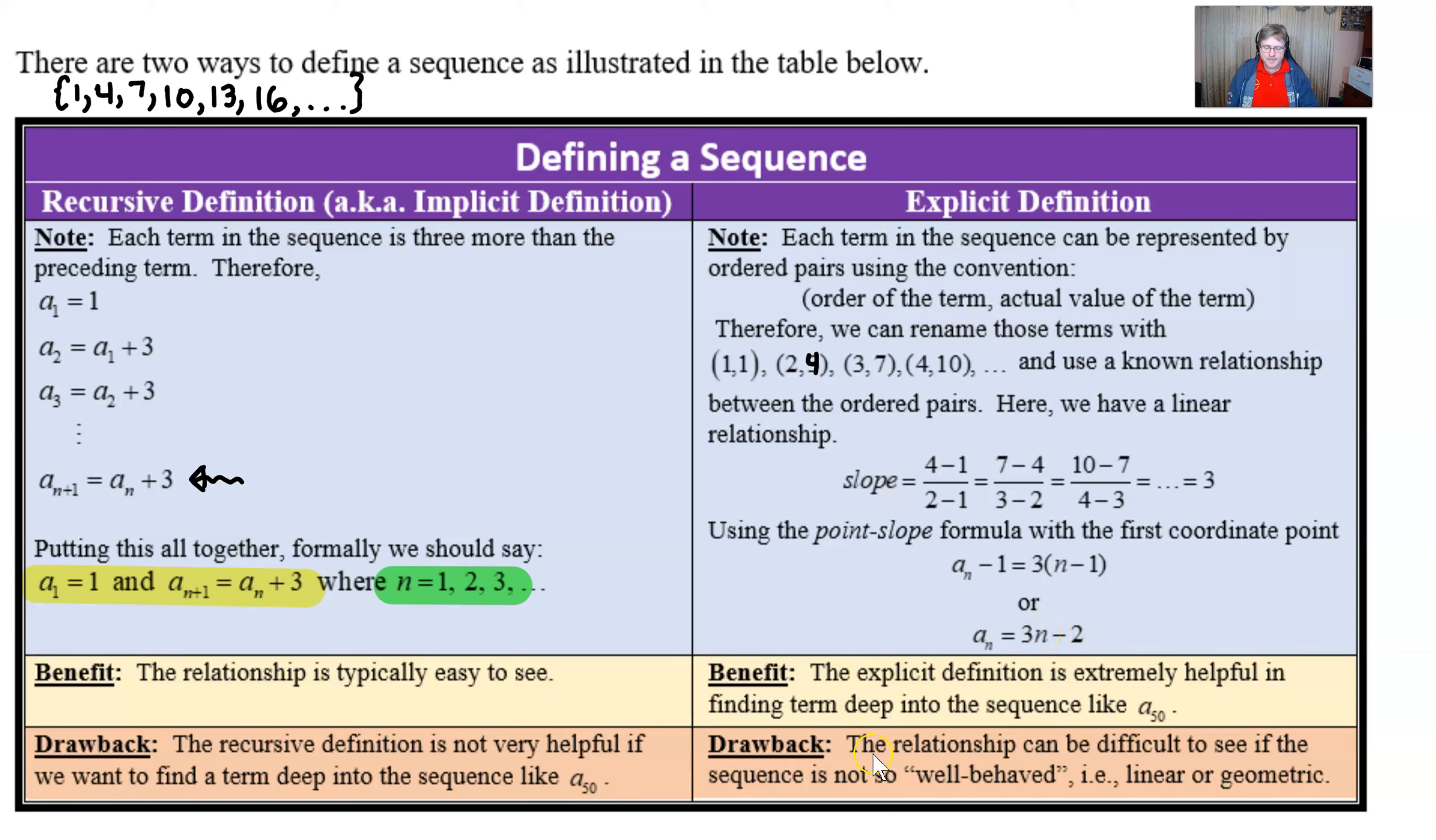Now, the drawback is that this relationship can be a little bit difficult to see if the sequence is not so well behaved like it was in this one being linear or some of the ones that we're going to see very soon geometric. Now, the one that I really want you to be good at is the explicit because that's the one that we're going to see a little bit more often in the course.